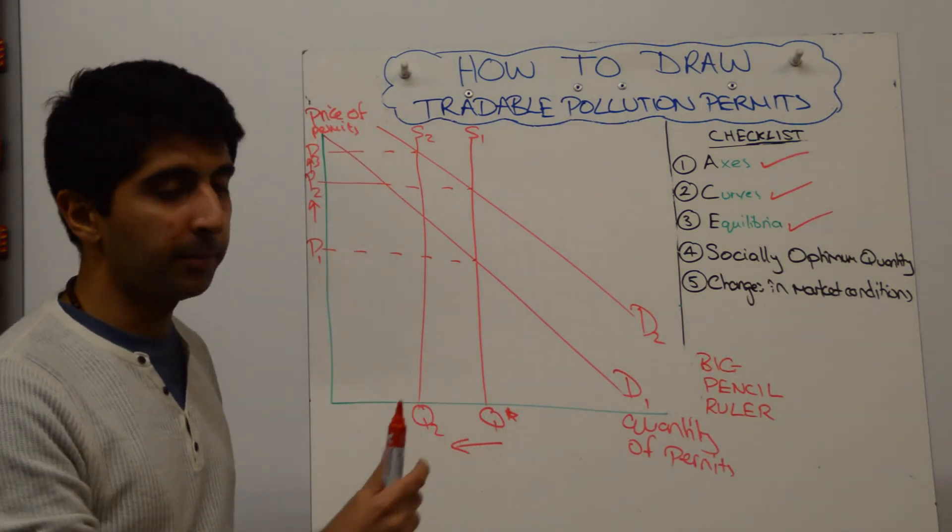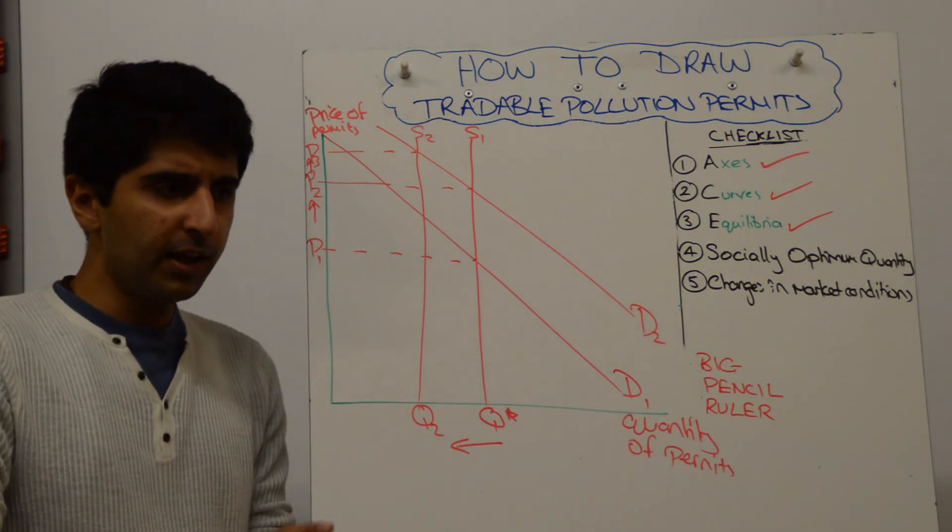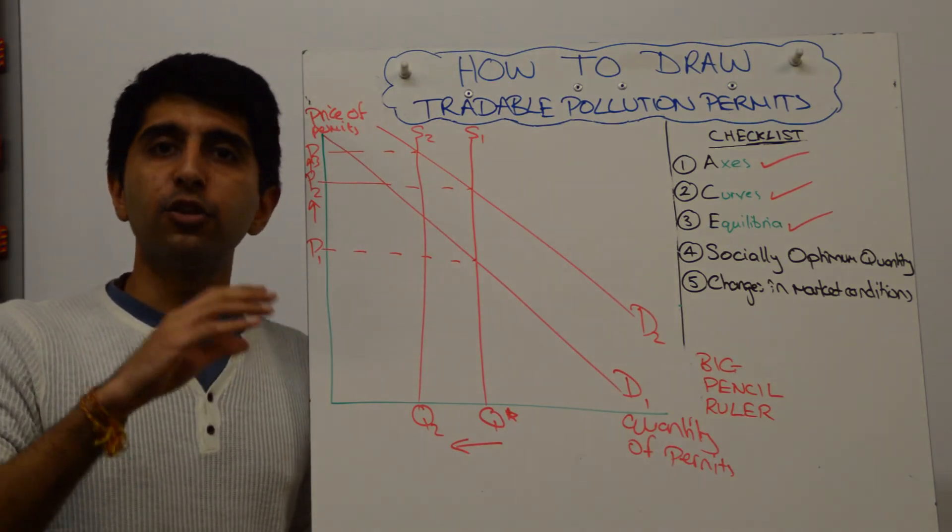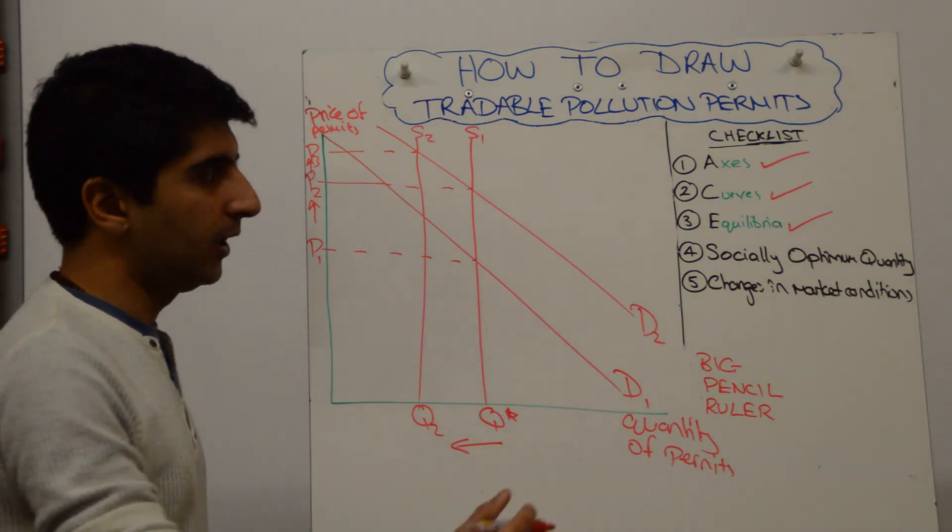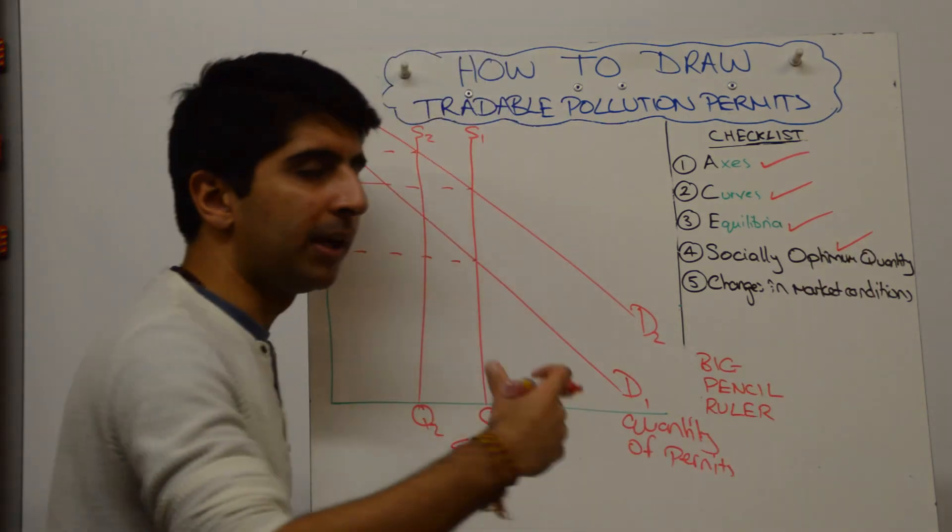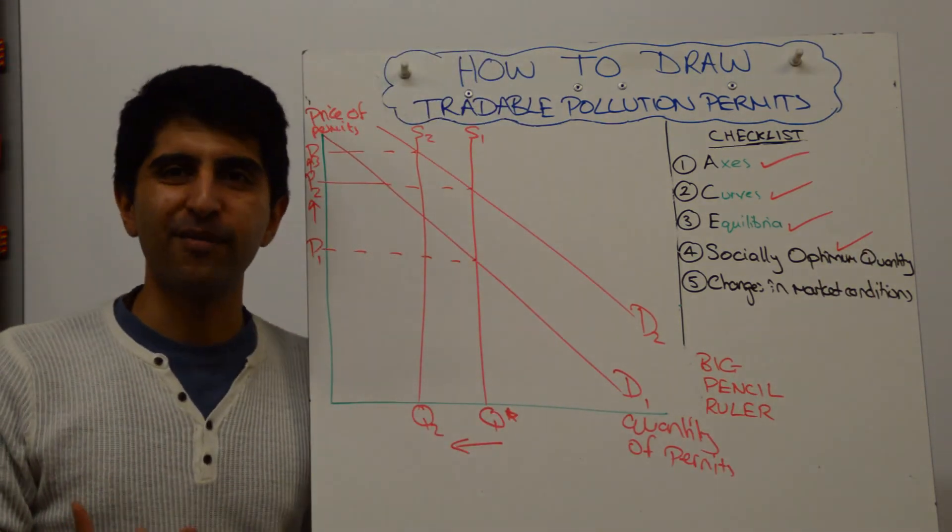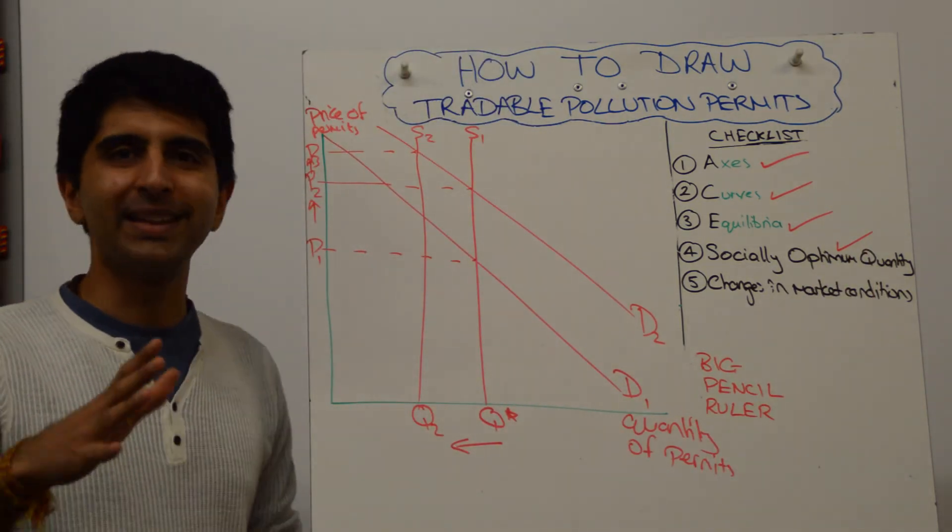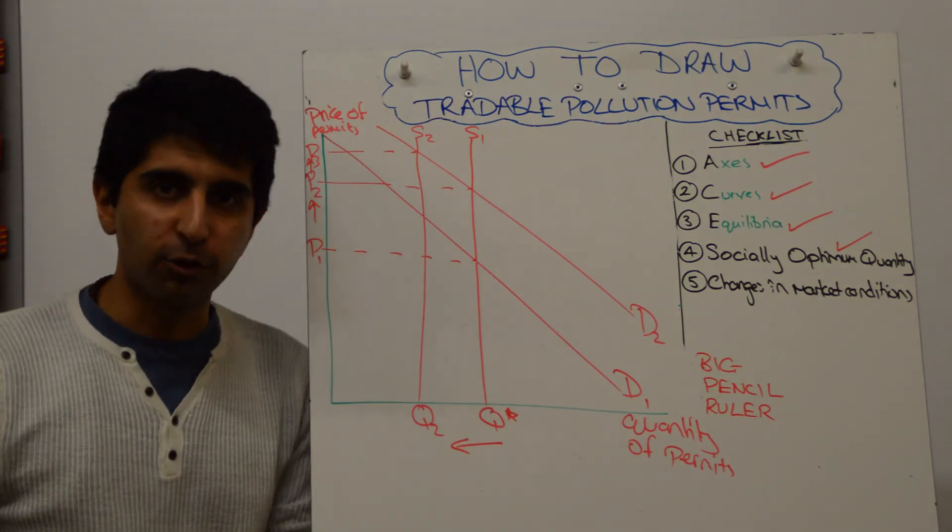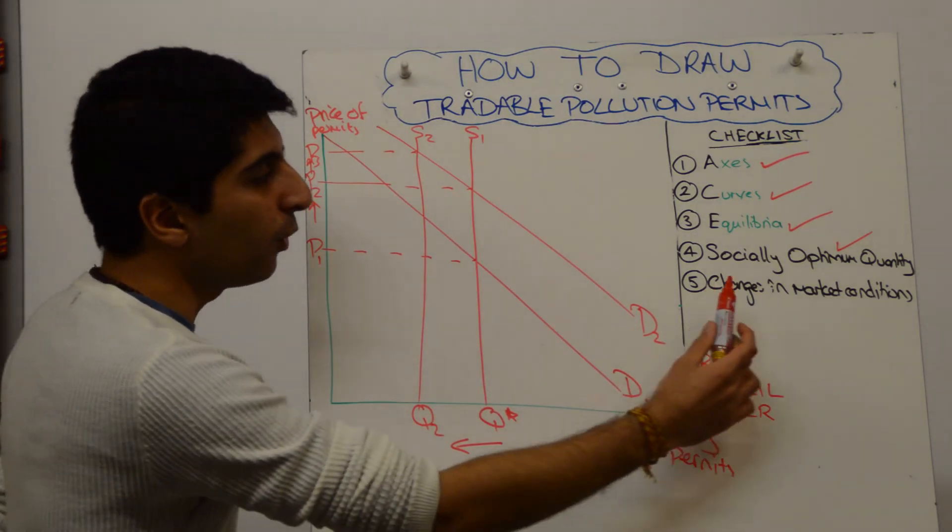Have we labelled our socially optimum quantity? Yeah, Q-star, that's the most important one. Because when the scheme is first implemented, whatever the cap the government sets should be the socially optimum quantity. And we're making that point clear, making the assumption of course that the government has got perfect information. Fine, I've critiqued that in my general video on tradeable pollution permits. We've also done number five, which I think is a useful thing to have in your head or in your mental checklist.